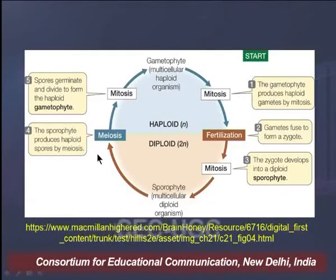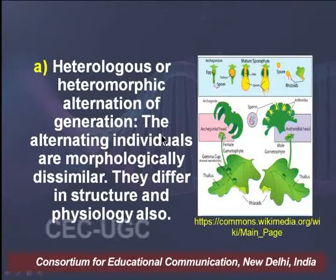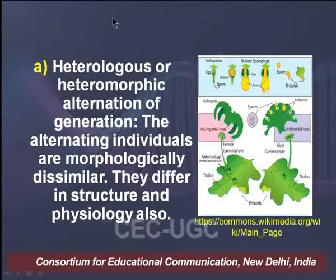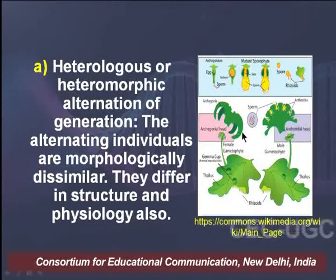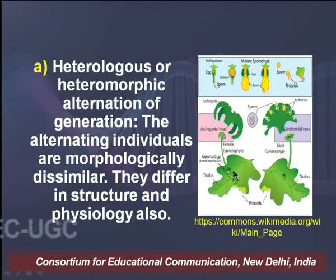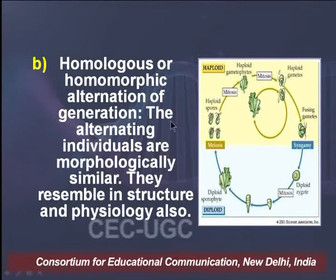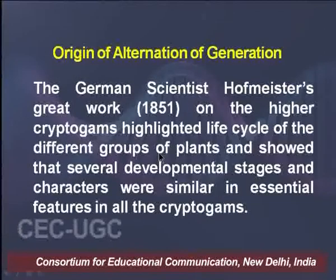Alternation of generation can be of two types depending upon the morphological structure of sporophytic and gametophytic generations. It can be heterologous or heteromorphic alternation of generation, where the alternating individuals are morphologically dissimilar and differ in structure and physiology. Alternatively, in homologous alternation of generation, the alternating individuals are morphologically similar and resemble each other in structure and physiology.